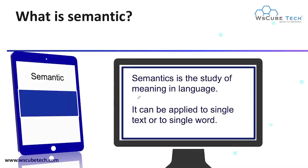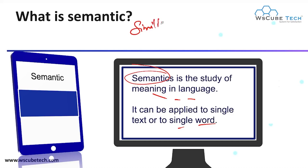So let's start with a brief definition of semantic. What is semantic? Semantic is the study of meaning in language. It can be applied to a single text or to a similar word. Basically, semantic means similar.